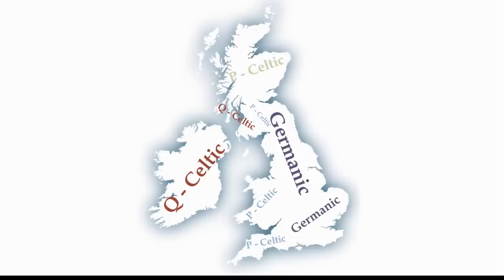The Picts are assumed to have spoken P-Celtic because they were likely related to the Britons living on their southern borders and were not the descendants of Irish immigrants. We can pretty much rule out that they would have spoken Q-Celtic, because that language formed in Ireland, and the only reason some lowland Scots spoke it was because the Dalriatans brought it over from Ireland.